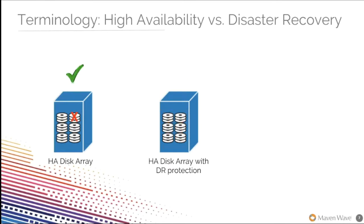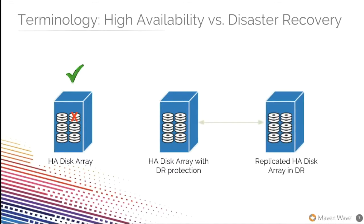Lastly, consider the same array with a second array in a different location. To give this configuration a warm or hot DR pattern, we implement a replication tool to synchronize the array to a secondary data center. Now, if that array experiences a single disk failure or if the entire array goes down, the data remains available via the secondary array. We've combined HA and DR to create a DR plan that can withstand a service interruption.